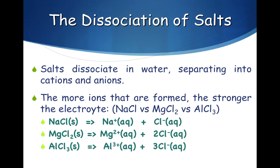Now let's look at aluminum chloride. When aluminum chloride dissociates in water, it forms the Al³⁺ ion and three chloride ions. Notice that there are a total of four ions produced when one aluminum chloride dissociates in water.